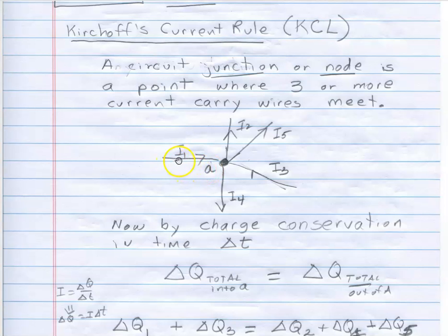In general we'll have currents flowing in and out of the various wires that are meeting up here at this junction. Just for sake of argument I'm putting I1 going into A, I2 out away from A, I5 away from A, I4 away from A, and I3 going in.